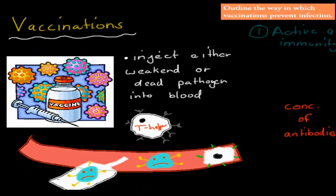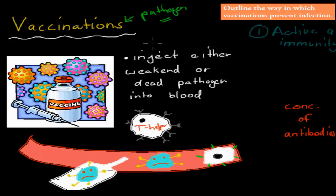Vaccinations are quite interesting. If you inject a vaccine into someone, you're actually injecting a pathogen into them in most cases. What you actually do is inject either a weakened or a dead pathogen into the blood. It's not going to infect you or cause any harm, but it is either too weak to cause disease, or it's dead.